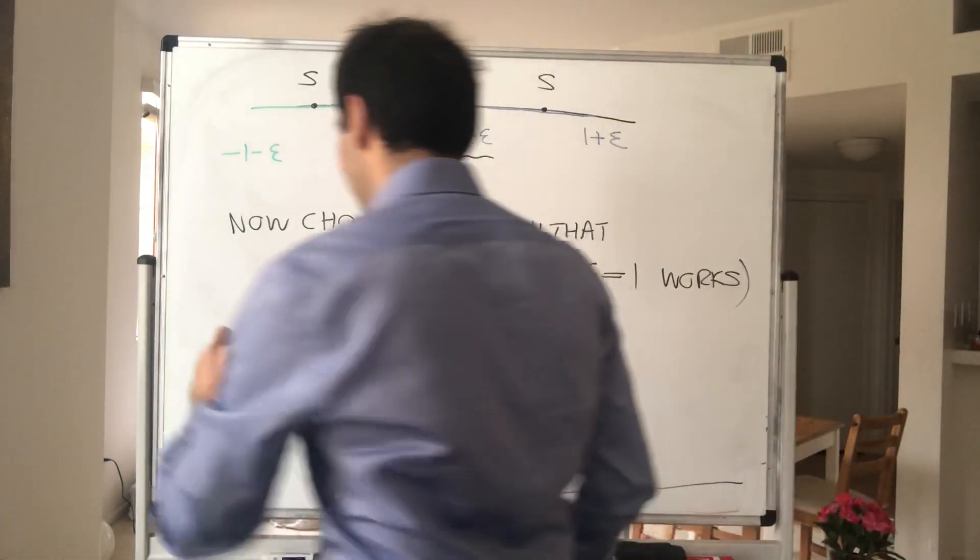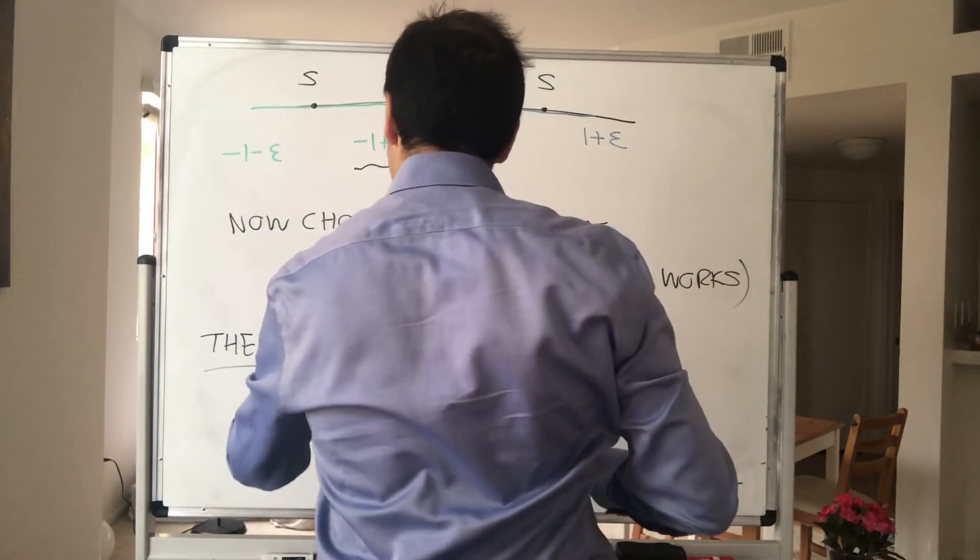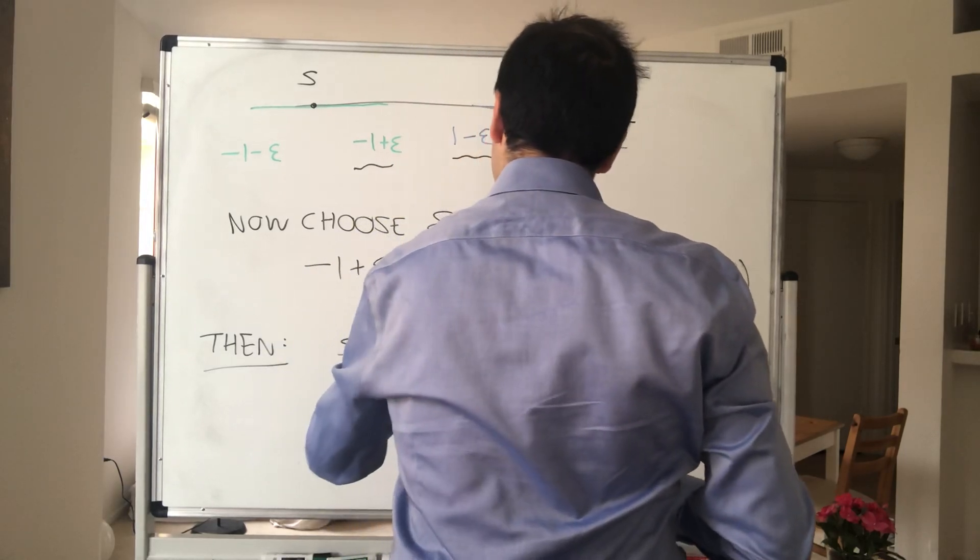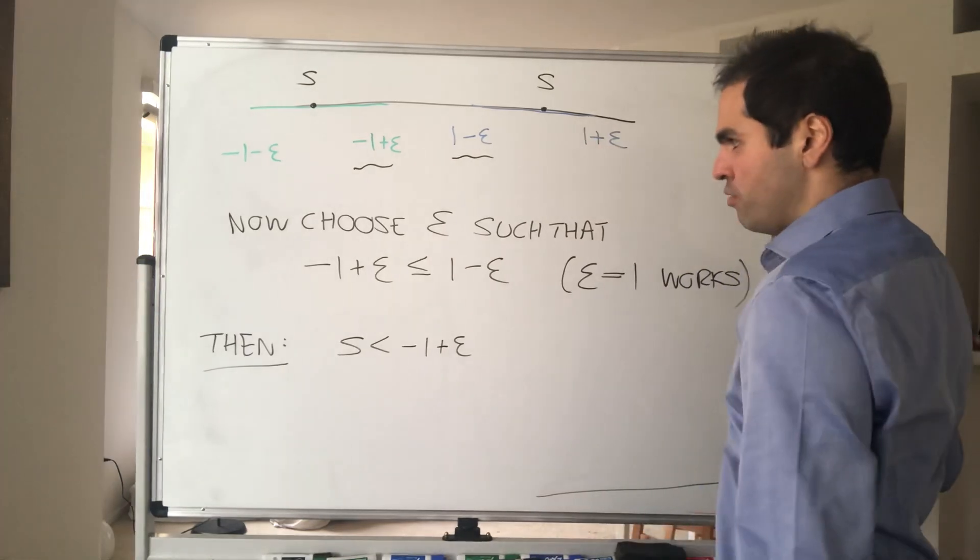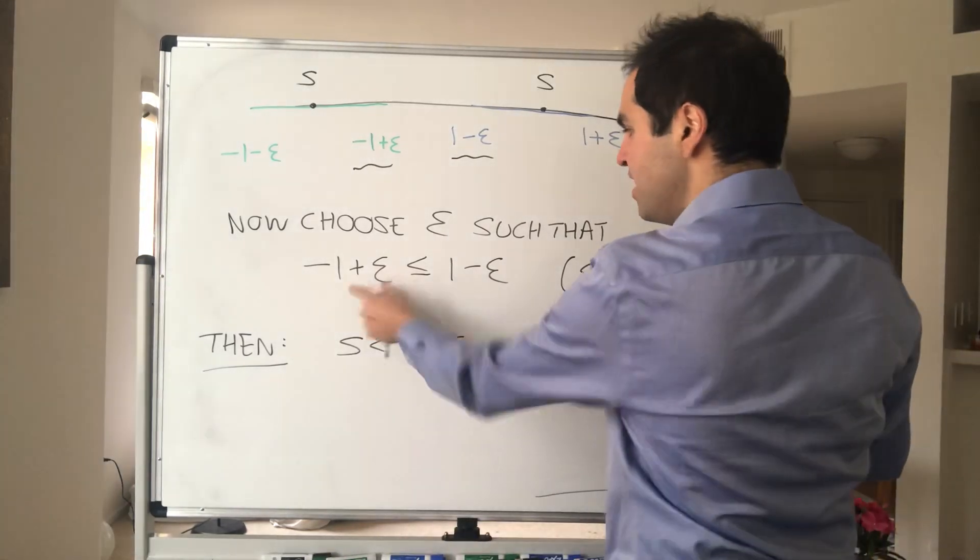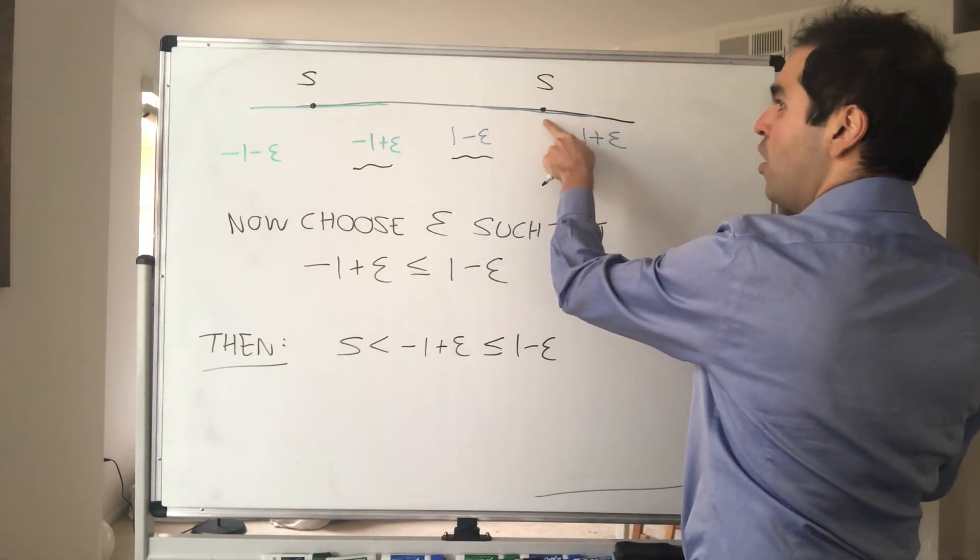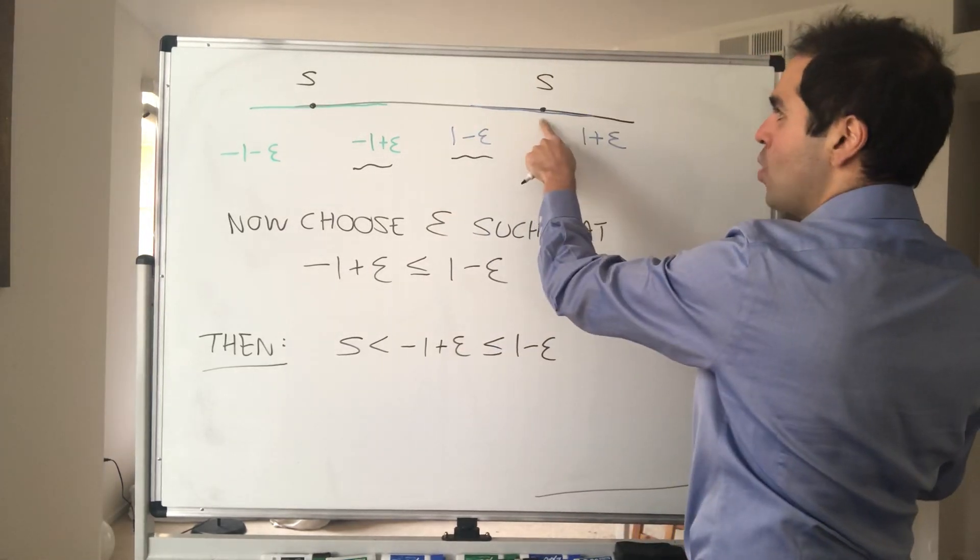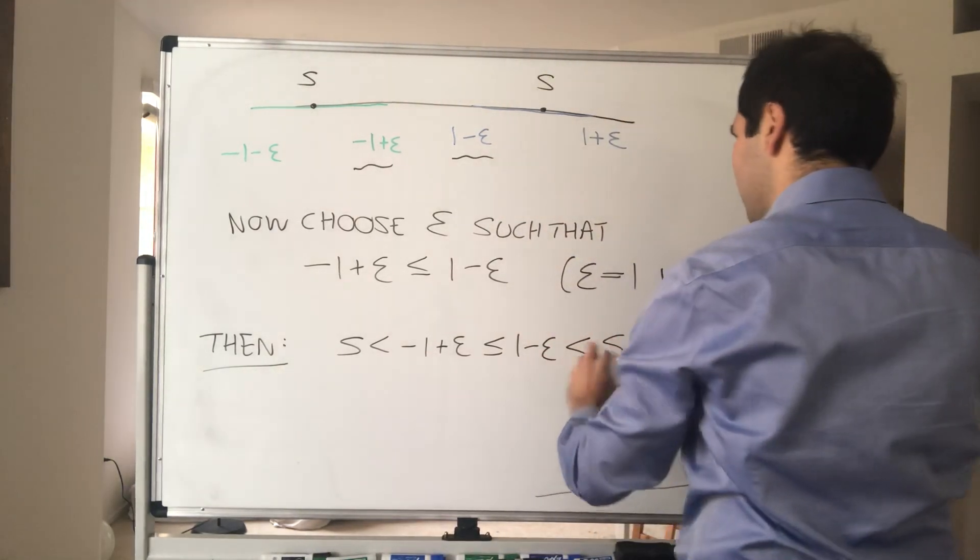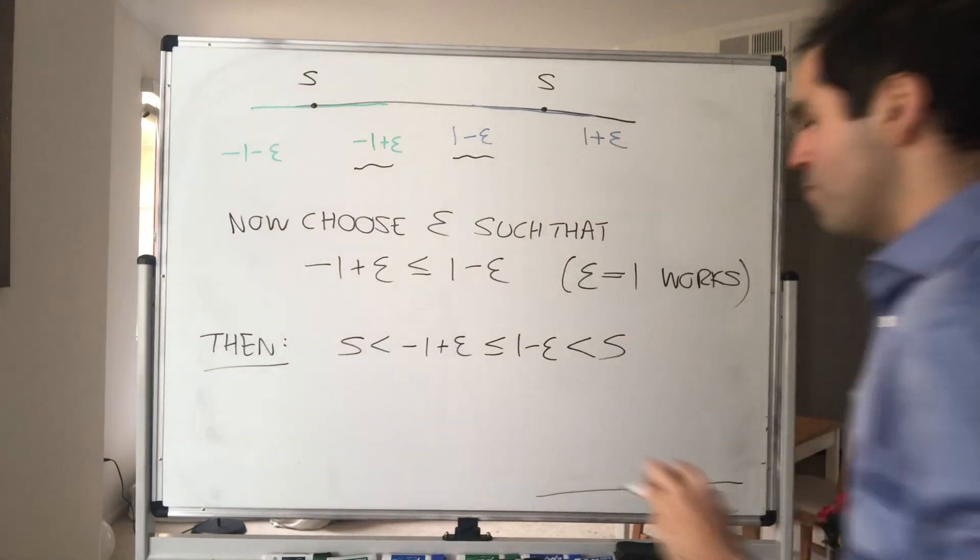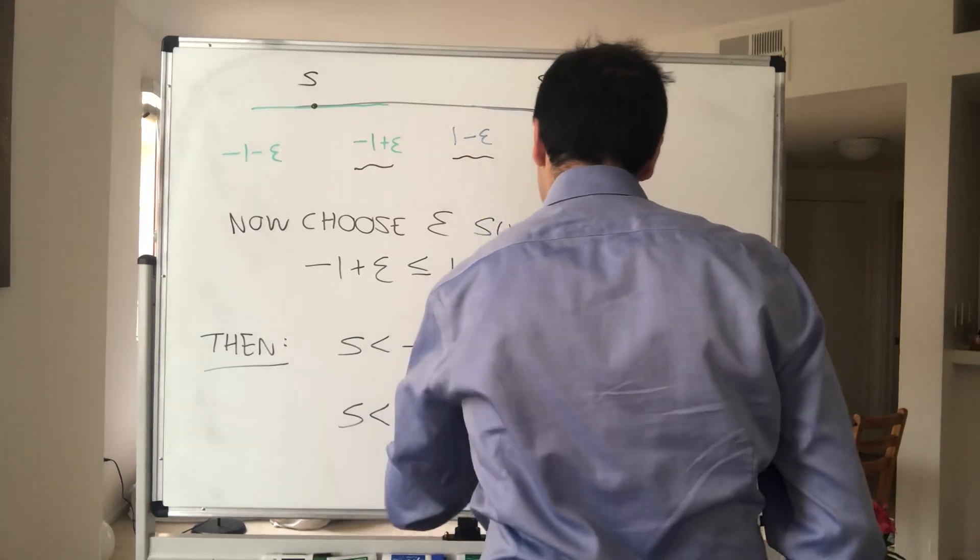Then what we get: on the one hand, we know s is less than -1 + epsilon. That's by this last equality I raised. Now we know this thing is less than or equal to this thing. And lastly, we also know by the very first inequality that s is bigger than 1 - epsilon. So in the end, if you combine this, you get s is strictly less than s, and that's a contradiction.